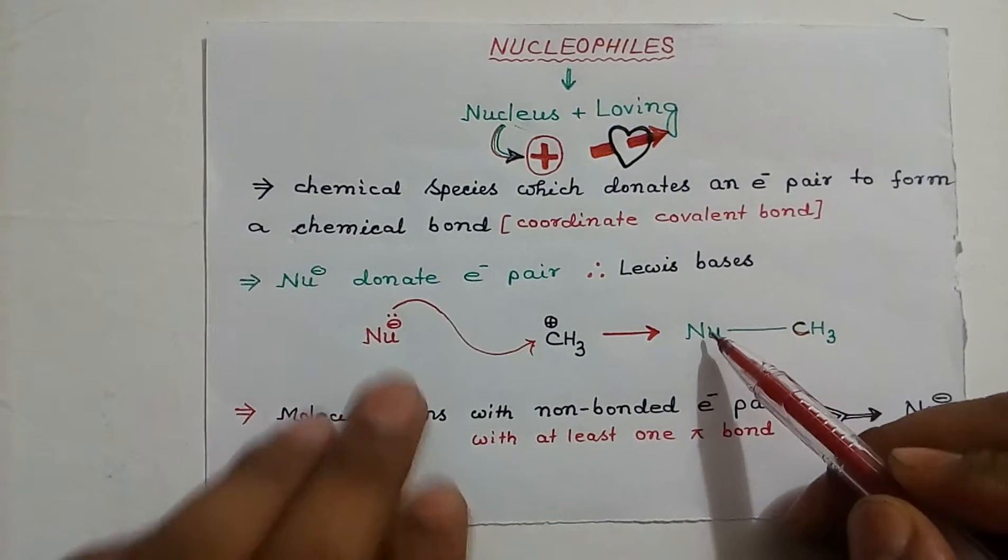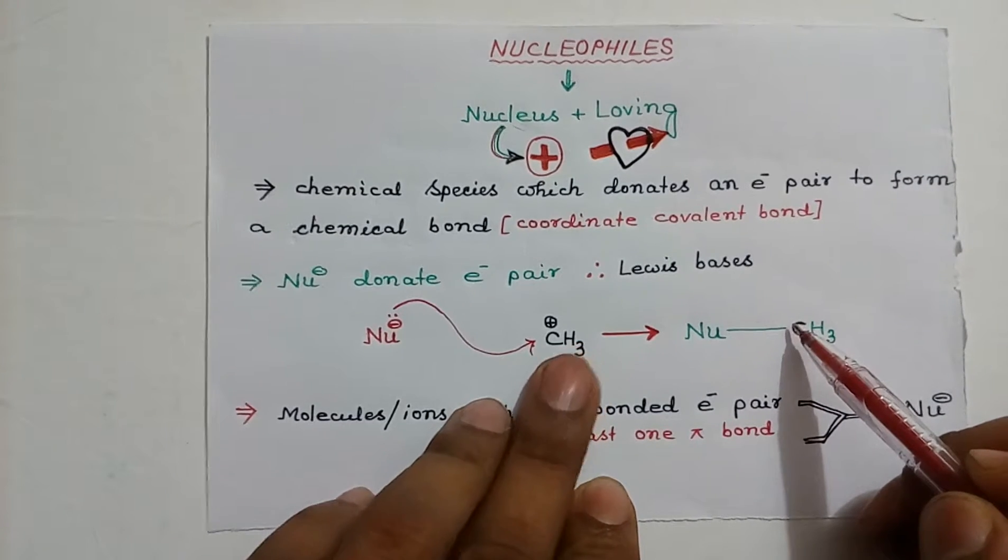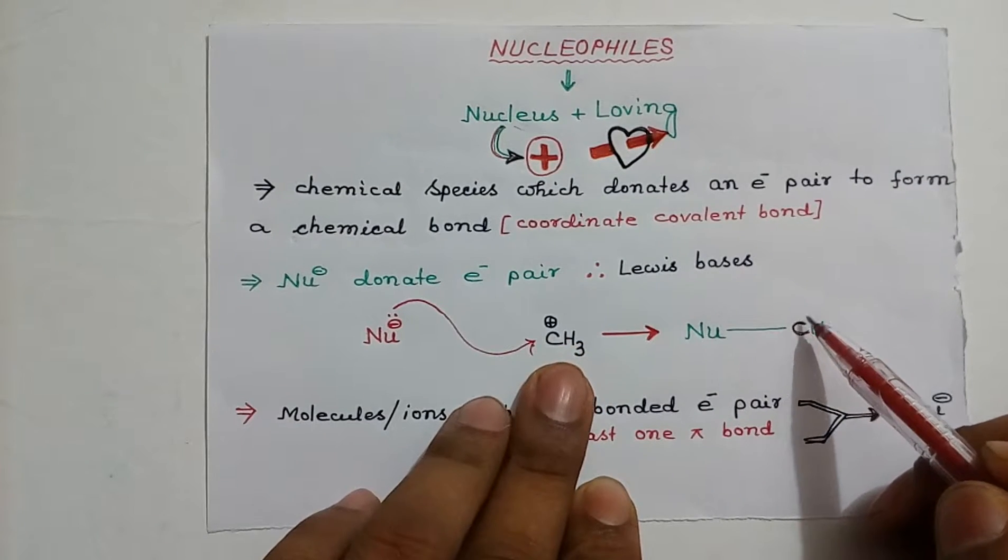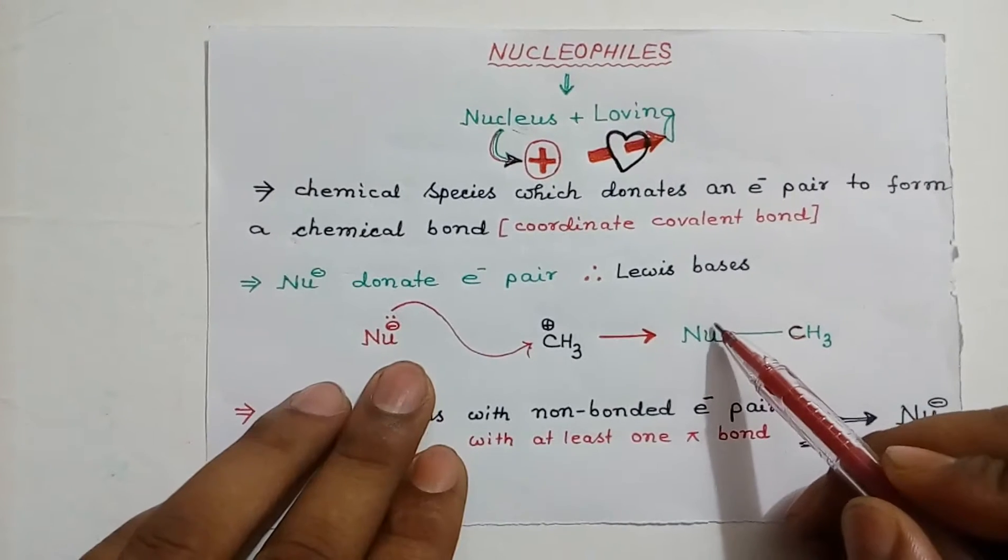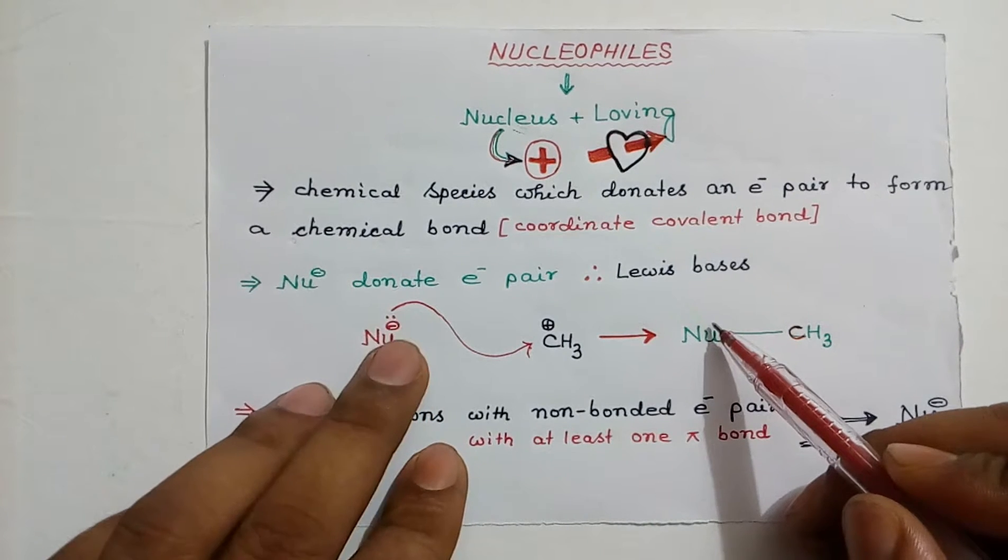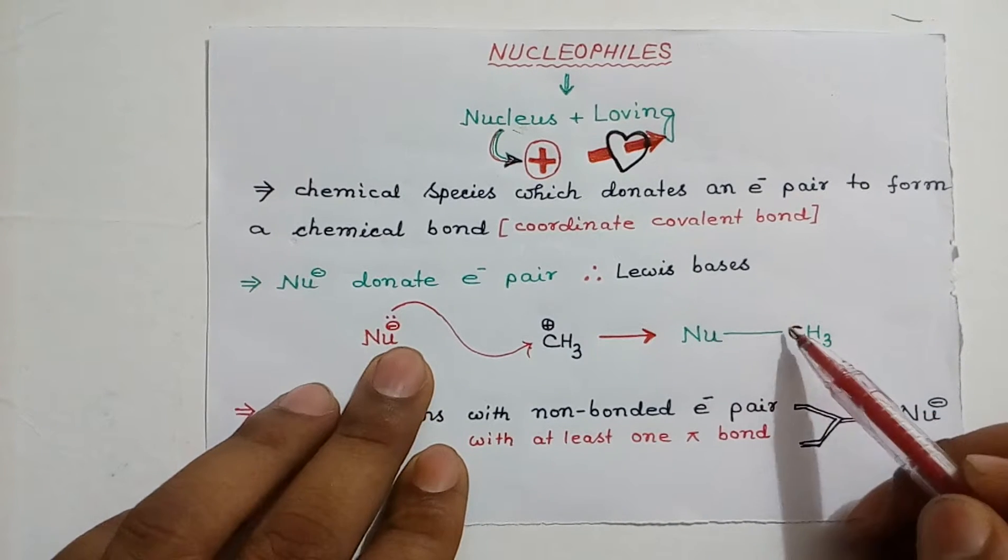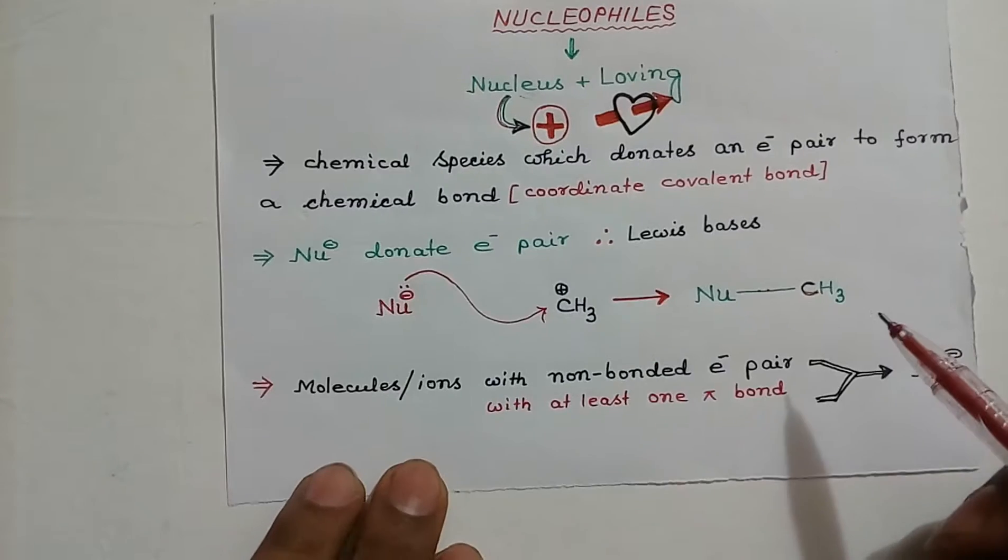Now, the positive charge on carbon is getting vanished because it is accepting one electron from nucleophile. And negative charge of a nucleophile is vanishing because it is giving its extra electron to the carbon to form a coordinate covalent bond.